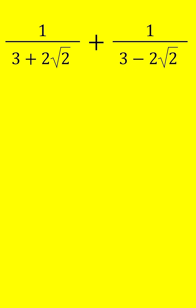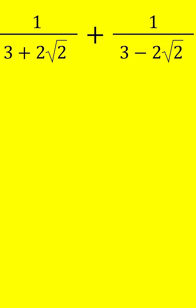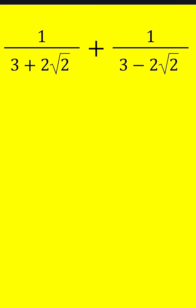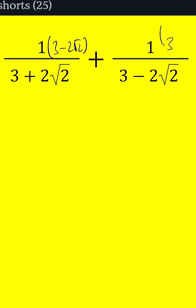Let's go ahead and multiply by the complex conjugates, which means we're going to multiply by 3 minus 2 root 2 here, and 3 plus 2 root 2 here. And of course, we're going to do it in the denominator too, so we're going to be multiplying these two things.